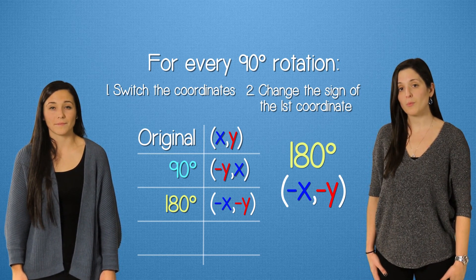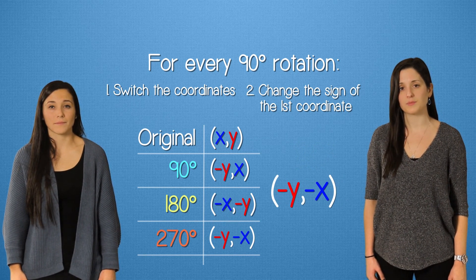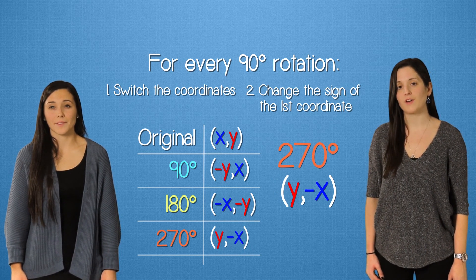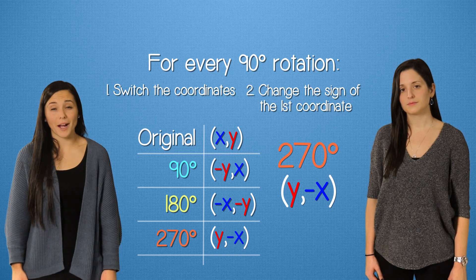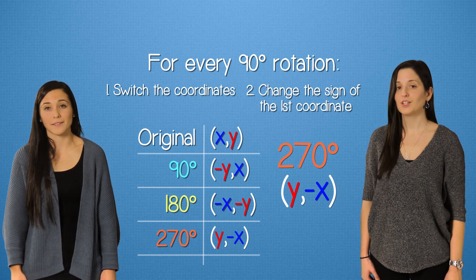And if we do it one more time for 270 degrees, the negative x goes to the back, and the negative y comes up front, and we change the sign. Positive y, negative x. And remember, a positive rotation means we rotate counterclockwise. Good luck!